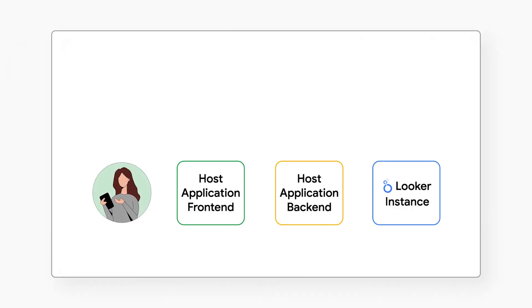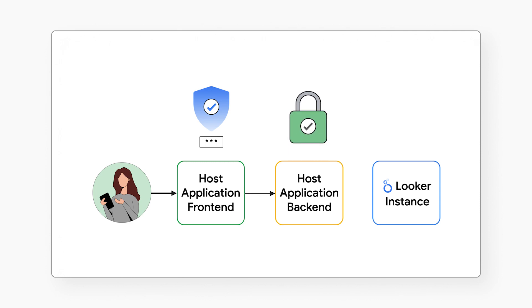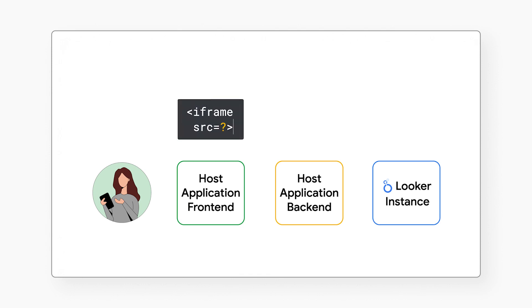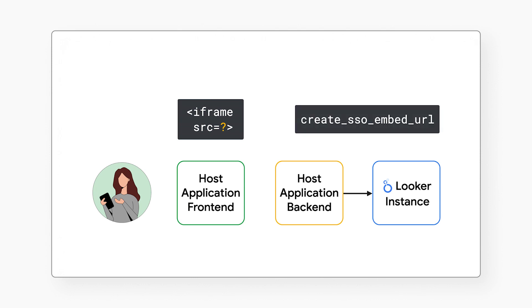Let's get started with your user. First, your user logs into your host application. Your host application backend authenticates and authorizes the user. Next, your host application frontend creates an iframe, and then requests from the backend the SSO embed URL to set on the iframe. That request to your backend triggers a downstream request to your Looker instance. Your backend determines what permissions your user should have and which embed user your user should map to.